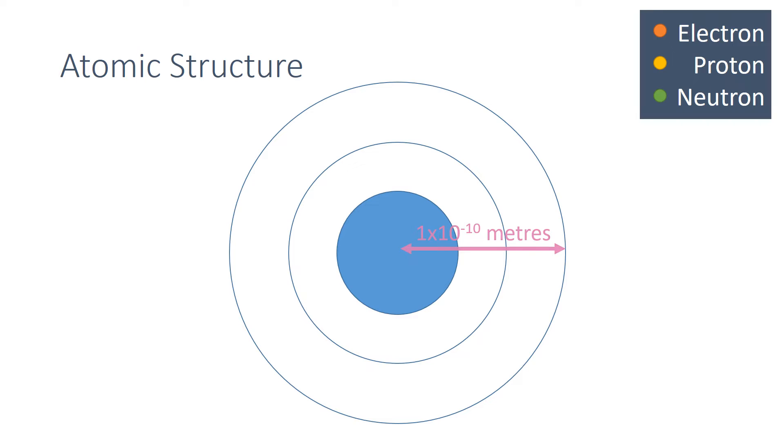The basic structure of an atom is a positively charged nucleus, composed of both protons and neutrons, surrounded by negatively charged electrons.